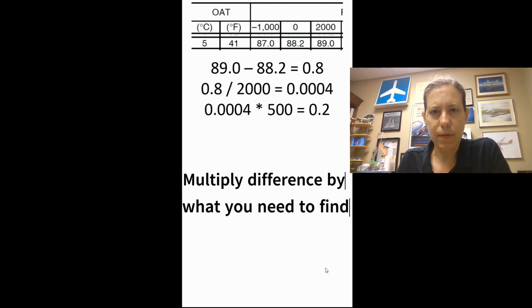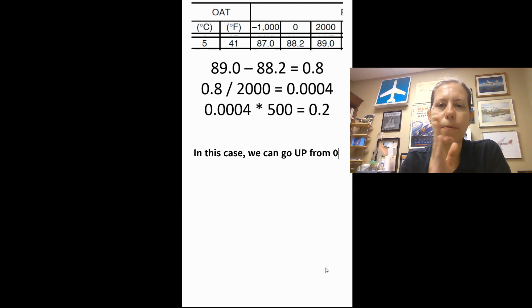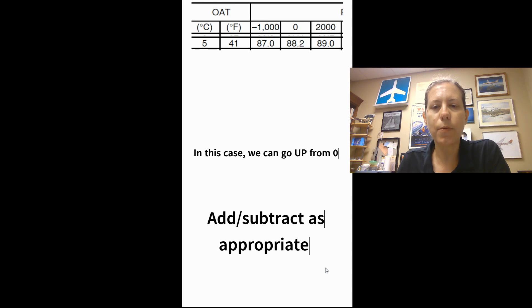Now I have to think, do I go up from 0 or down from 2,000? Well, if I want to be at 500 feet, I go up from 0. So I'm going to take that 0.2 and add it to 88.2. And when I do that, I get 88.4.